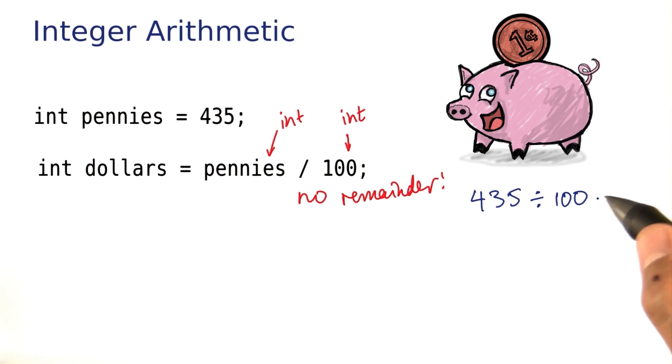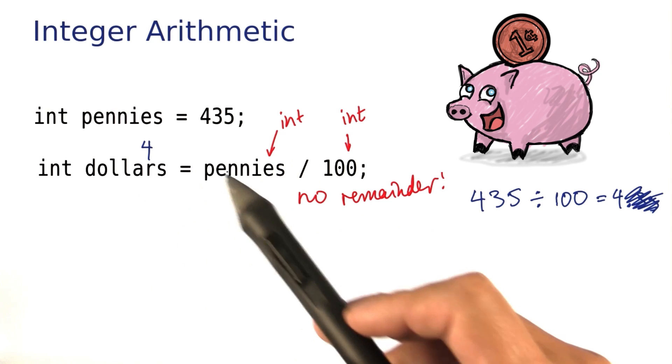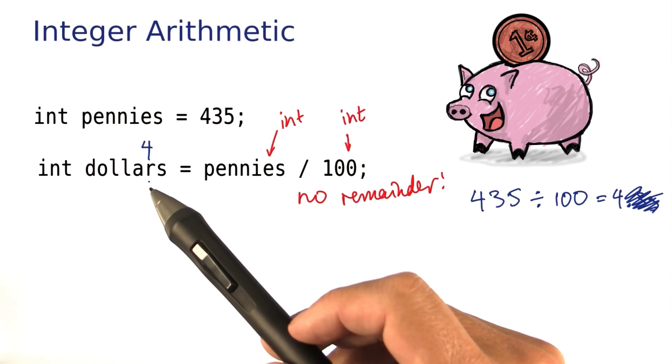Mathematically, 435 divided by 100 is of course 4.35, and then the .35 is gone. The leftover is 4 as an integer, and that number here is now saved as the dollars.